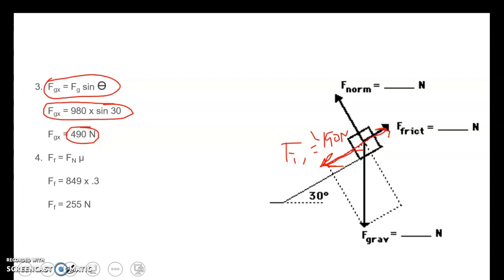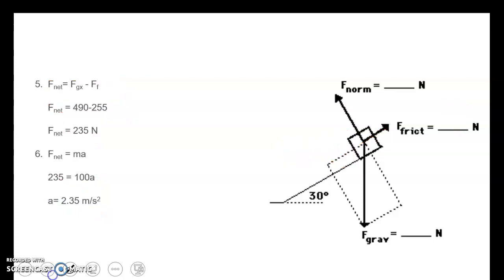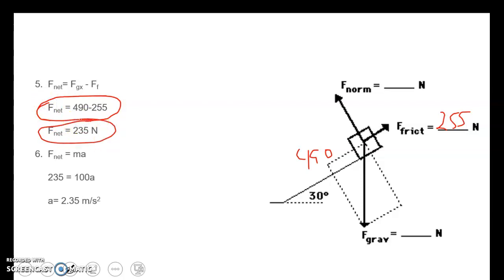Friction is pushing back. The force of friction is normal force times mu: 849 newtons times 0.3 gives a force of friction of 255 newtons. The force of friction goes up the incline because the object is moving down — friction opposes motion. We have 490 newtons going down and 255 newtons pushing back, so we find net force by subtracting: 490 minus 255 gives a net force of 235 newtons.